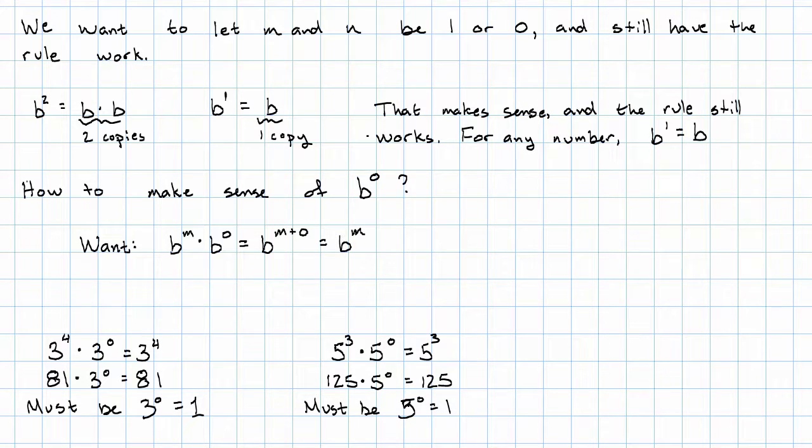Okay, but check this out. What if we have zero to the fourth times zero to the zero? Well, that means zero times zero to the zero is zero.